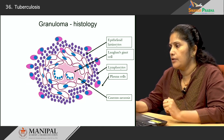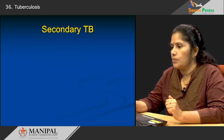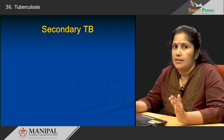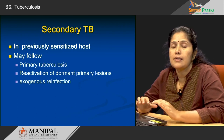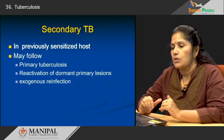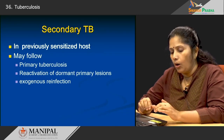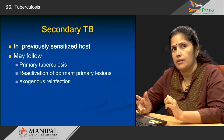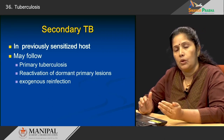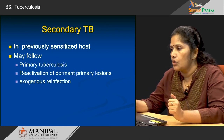Let us move on to the second form of the disease: secondary tuberculosis. Unlike primary tuberculosis where the patient is unsensitized, secondary tuberculosis is seen in previously sensitized patients. Patients who already had primary tuberculosis can develop secondary tuberculosis, or a patient has a dormant lesion which gets reactivated, or it can be a reinfection. These are the three main ways patients can develop secondary tuberculosis.